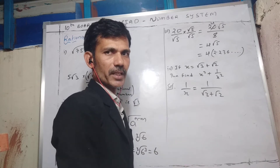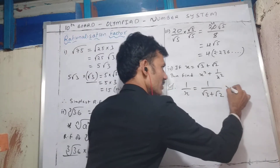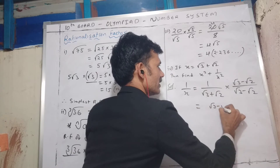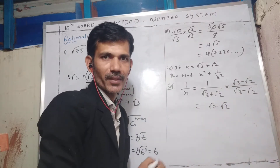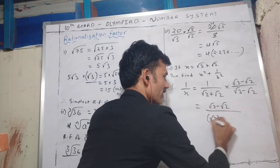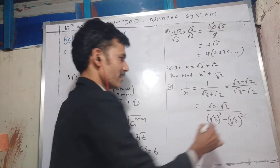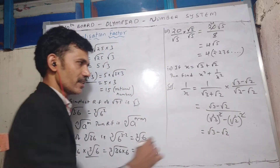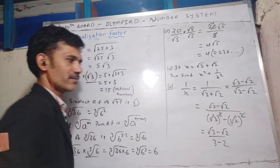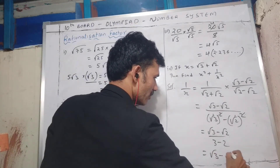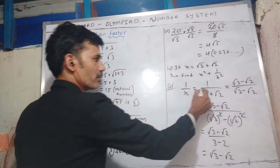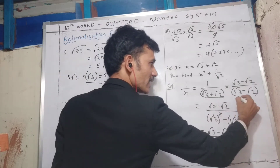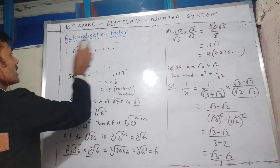The denominator is in the form (a + b). We multiply with (a − b) so we can apply the algebraic identity. So I will multiply numerator and denominator by (√3 − √2). The denominator becomes (√3 + √2)(√3 − √2) = a² − b² = 3 − 2 = 1. So we get 1/x = √3 − √2. When multiplying (√3 + √2) with (√3 − √2), we get a rational number, so one is the rationalizing factor of the other.